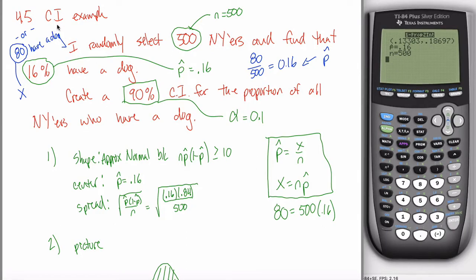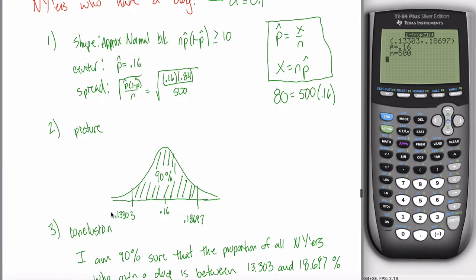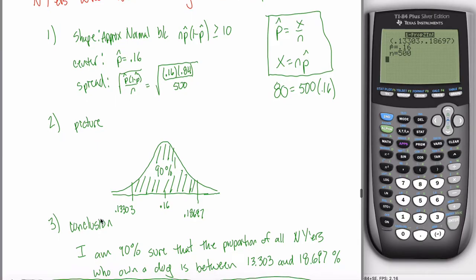In the last video, we learned how to create a confidence interval when your data is categorical binary. In other words, a confidence interval for a proportion as opposed to a mean. Maybe you remember the last time when we talked about confidence intervals, there were always these first three steps: shape, center, spread, picture, and your conclusion.